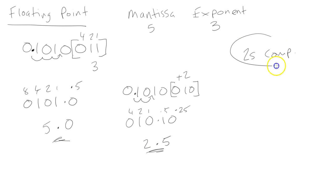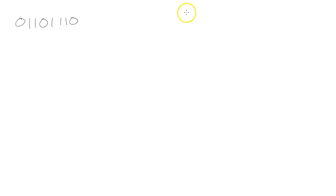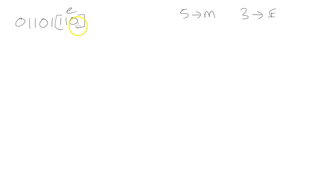I mentioned earlier that this is in two's complement. So what happens if the exponent is actually a negative number? Let's take a look at that. We're going to go: 0, 1, 1, 0, 1, 1, 1, 0. We're going to stick with 5 bits for the mantissa and 3 for the exponent. The exponent is — remember, this is in two's comp — this is 1, this is 2, and this is minus 4. Minus 4 plus 2 results in minus 2. So we're going to be moving the decimal place two places to the left.